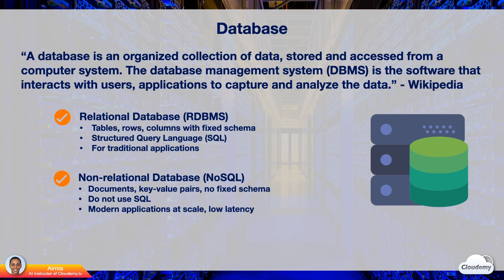NoSQL databases use documents and key-value stores instead of tables, rows, or columns. Non-relational databases don't impose fixed schemas — you don't need to define a fixed number of columns or data types. NoSQL databases can store less structured data, and most do not support SQL for data queries. Non-relational databases became really popular recently; they were built for web-scale applications that require low latency to store massive data.